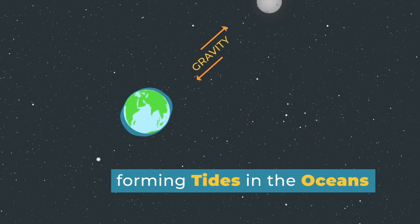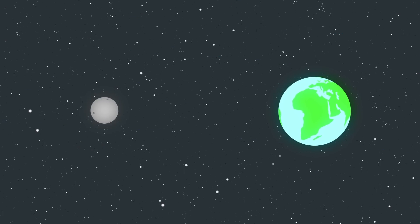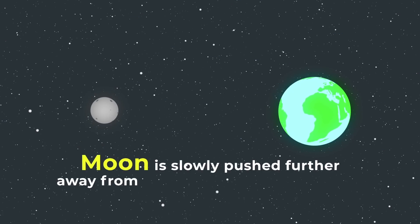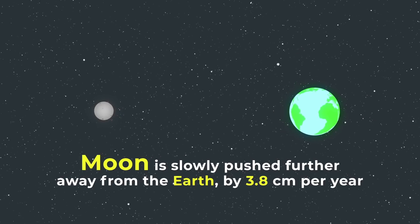You see that kids? If there wasn't any moon there won't be any tides. But due to this friction the moon is slowly pushed further away from the earth by 3.8 centimeters per year.